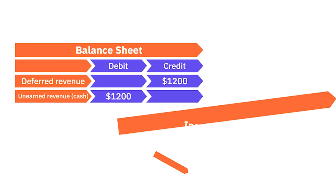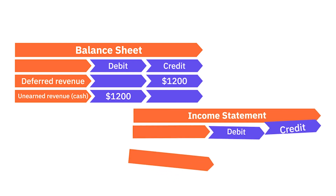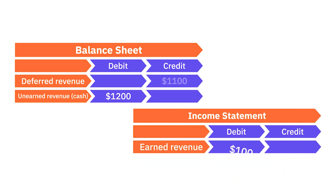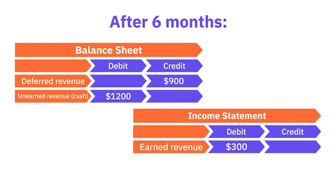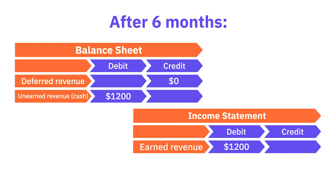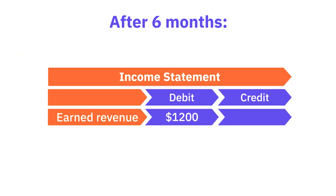As each month passes, you can move $100 of your deferred revenue balance into your income statement. After six months, here's what the accounts will look like. This continues until the end of the subscription. At this point, the deferred revenue balance is $0 and the earned revenue is $1,200.